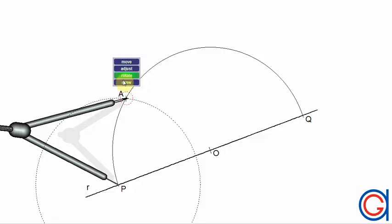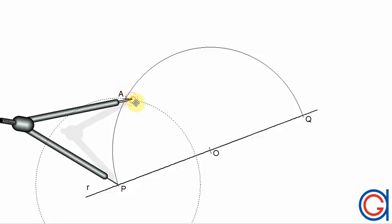Now the next step is to put our compass on point B and set it to the length PA and scribe an arc.